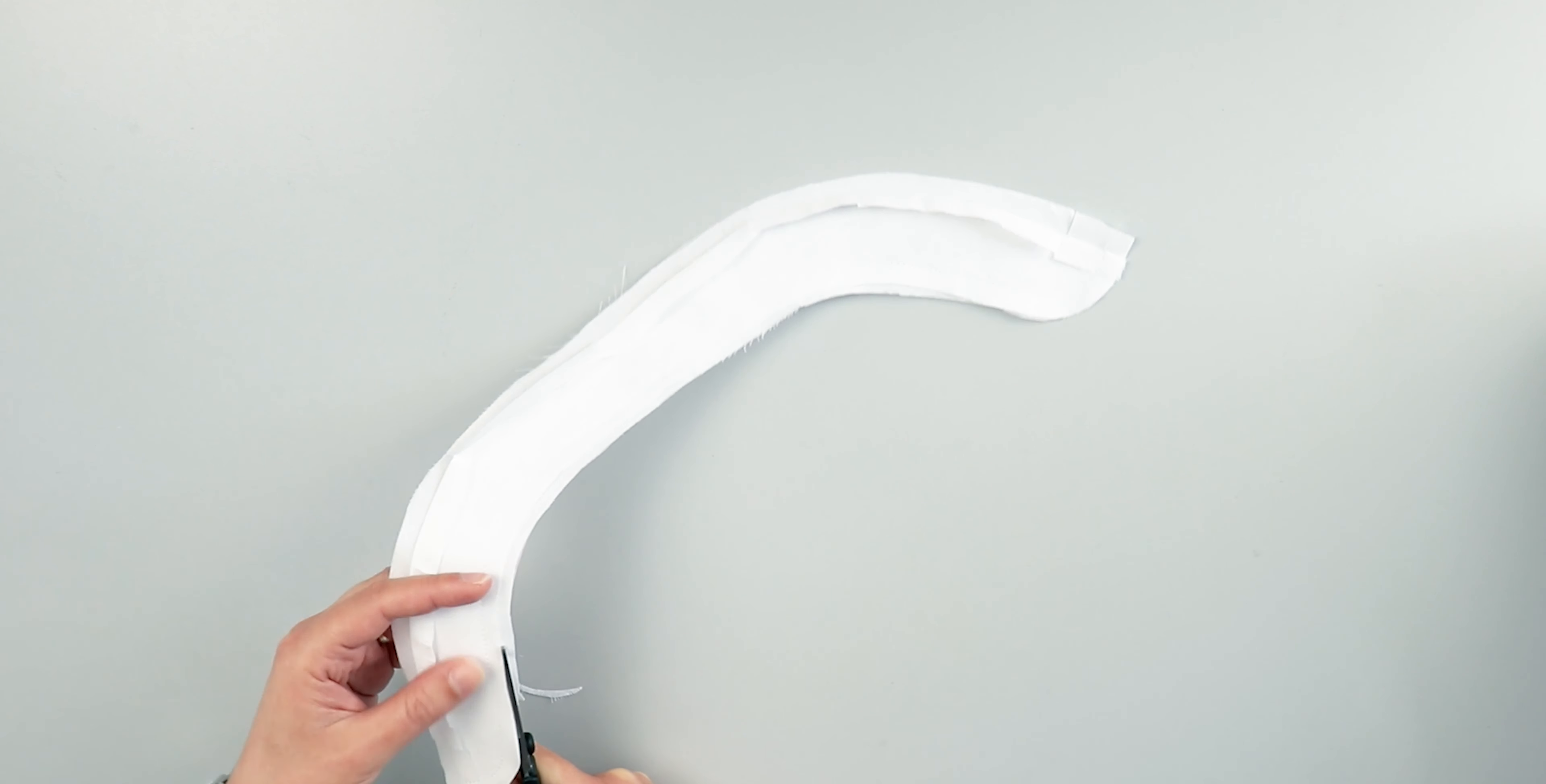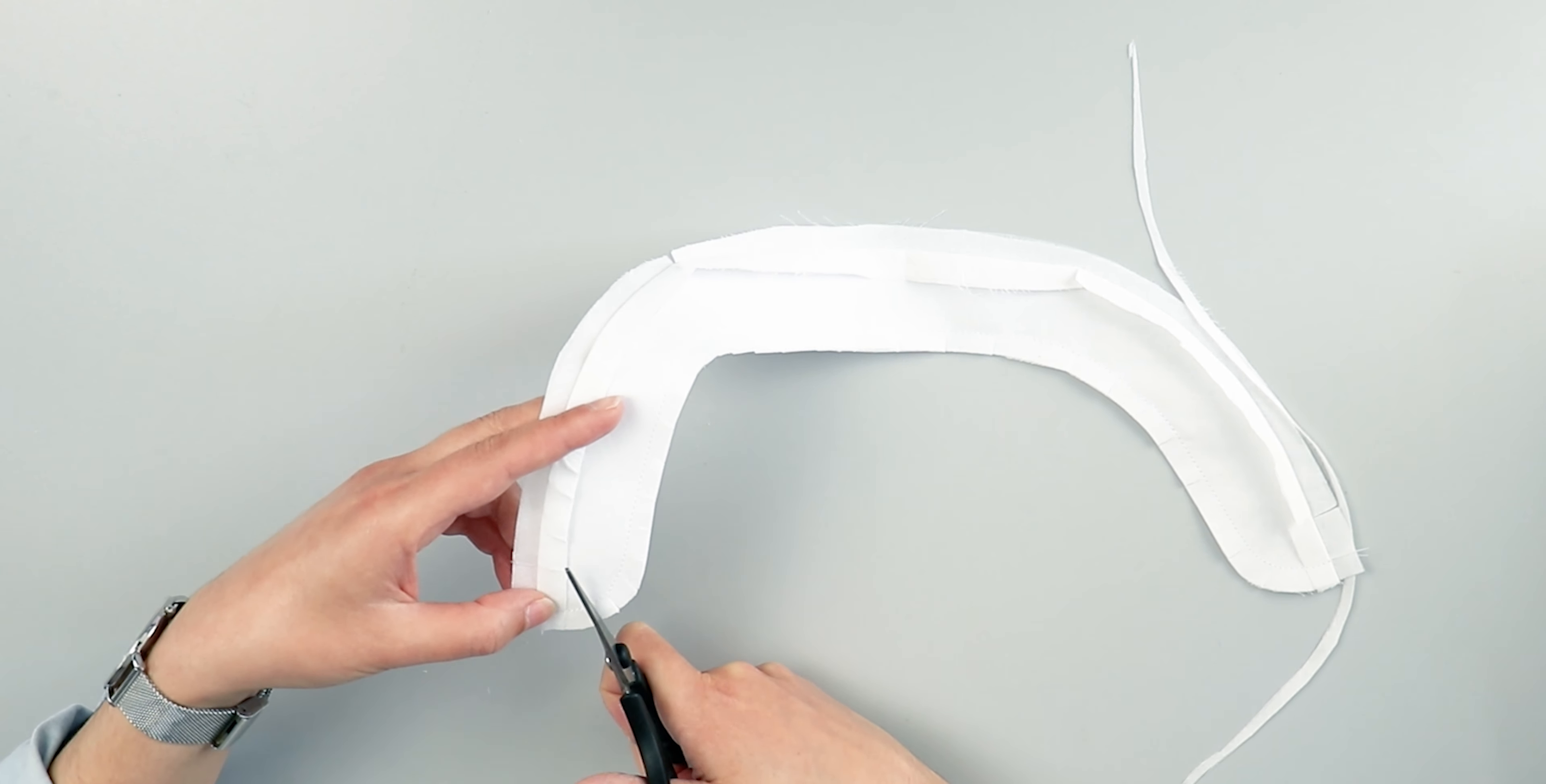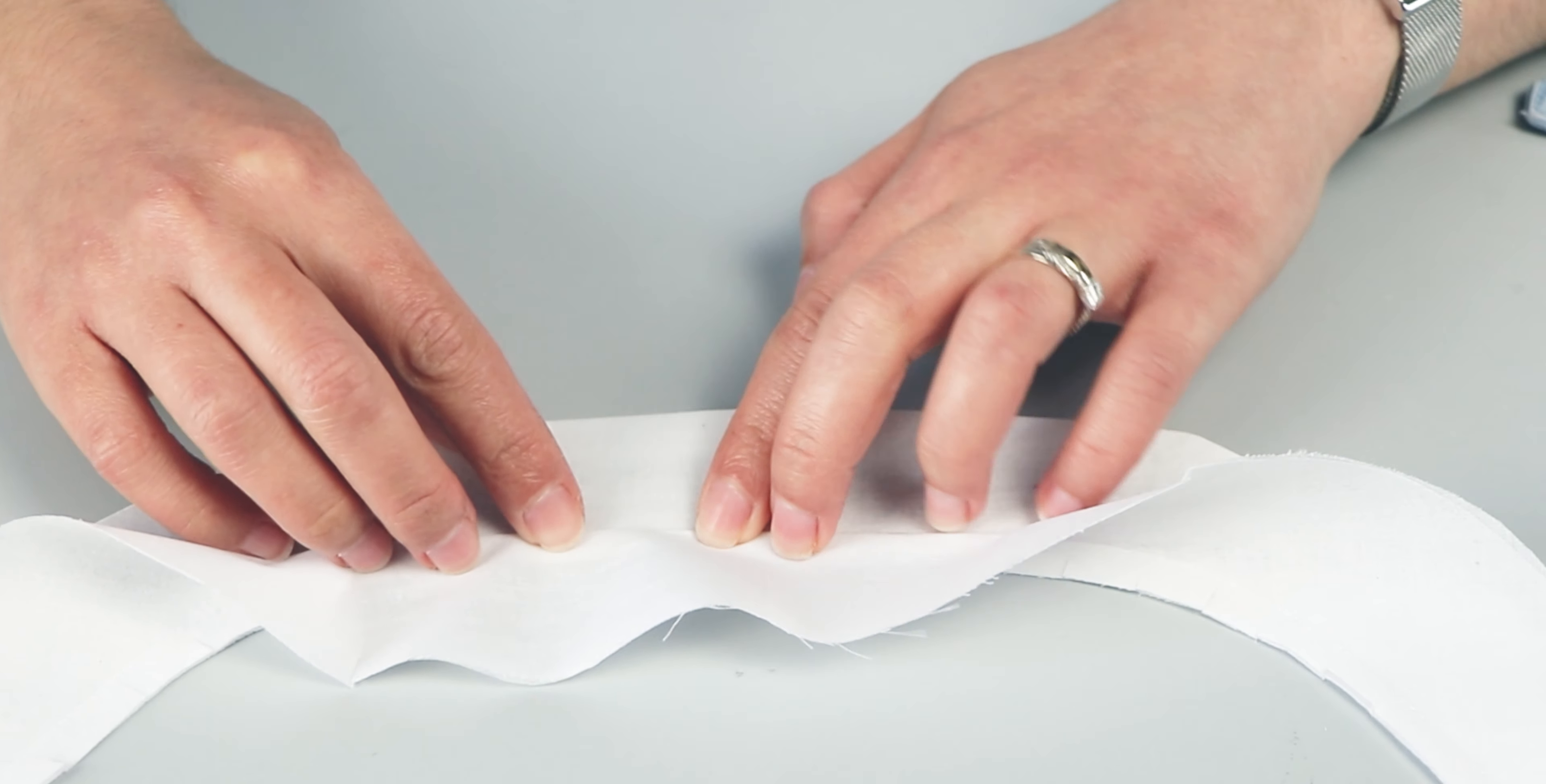Then, I trim the seam allowance a little bit and cut notches into the seam allowance along the edge that we just sewed to prevent bunching. Be careful not to cut too deep and cut through the sewing we just did. Open up the collar piece and sew along this edge through the fabric and the seam.